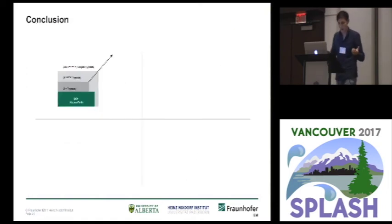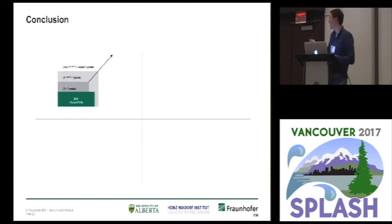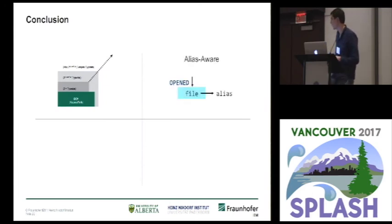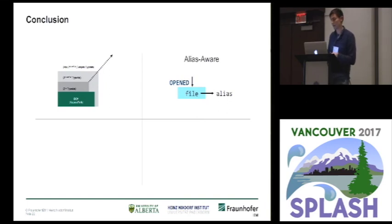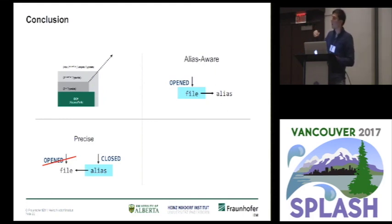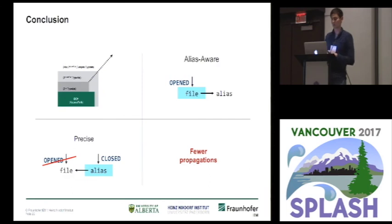With that, I would like to finish and conclude. With IDEAL, we have a context-, flow-, and field-sensitive data flow analysis framework that reasons about access paths — not sets of access paths — and therefore we could show that we can shrink the size of the graphs created. It is alias-aware in the sense that wherever aliases are necessary, we inject the required edges into the graph. Because this gives an over-approximation and we lose precision, we increase precision again by performing strong updates. The end result is a more efficient framework that needs fewer propagations and creates smaller graphs. Thank you very much.